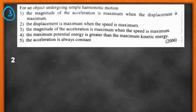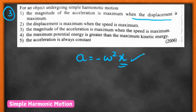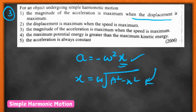Now for another SHM question: for an object undergoing simple harmonic motion, the magnitude of acceleration is maximum when the displacement is maximum. The equation is a = −ω²x, where x is displacement from the center. When displacement x is maximum, acceleration is indeed maximum — so this is correct. The second statement says displacement is maximum when the speed is maximum. Using v = ω√(A² − x²), when x is zero, speed is maximum — so displacement is not maximum when speed is maximum; that's wrong.